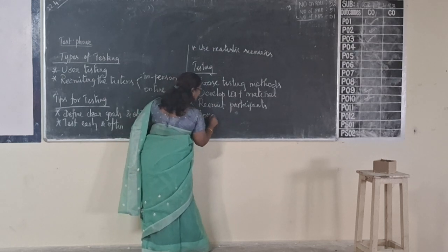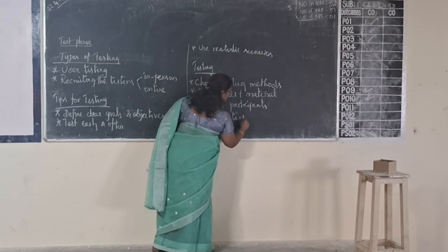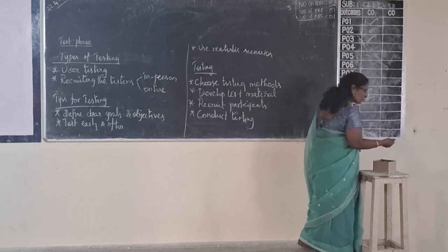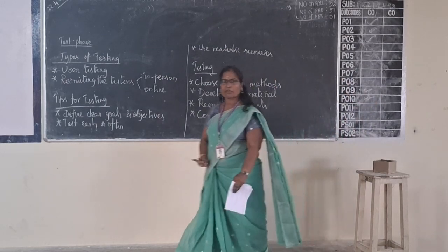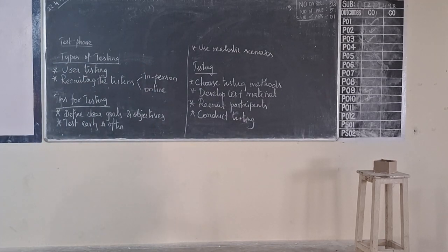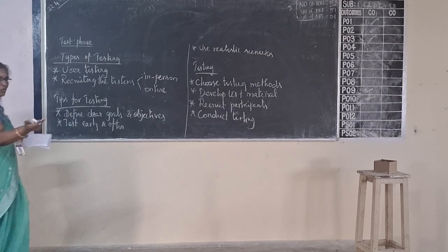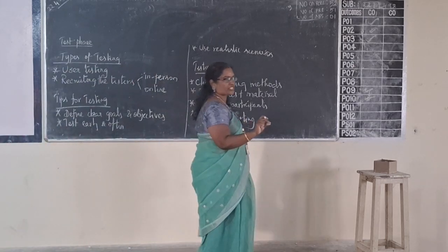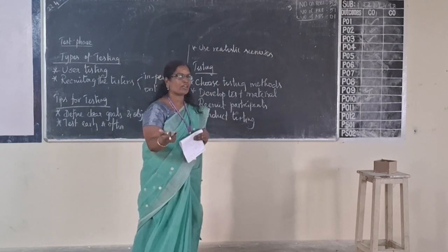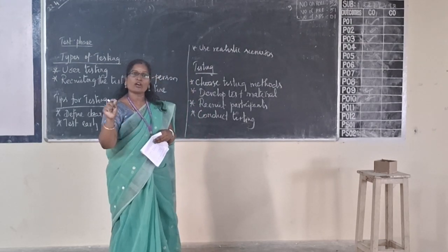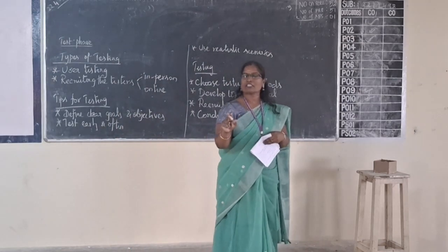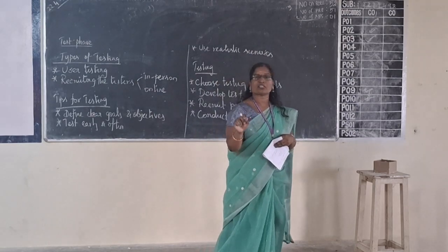Fifth step: conduct the testing — everything is ready from the previous steps, so now you schedule and conduct the test. After testing, what do we do? We collect a lot of information and feedback. The next step is to analyze the test results — without analysis there is no use. Just as an examiner evaluates a paper to understand a student's knowledge, we evaluate the test data to understand the prototype's quality.